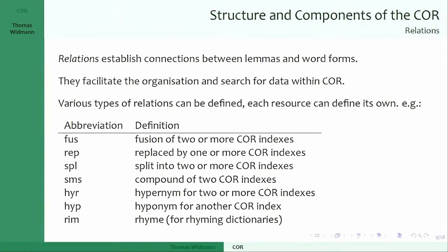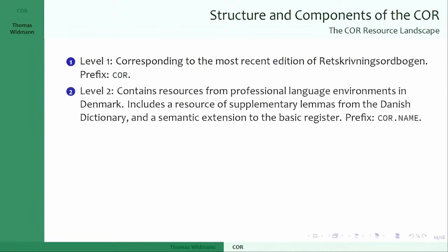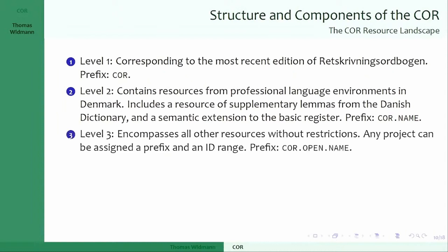The resource landscape has levels. Level 1 is what you've seen — the basic register. Level 2 is for resources published by professional language environments in Denmark, such as the Centre for Language Technology at the University of Copenhagen and the Society for Danish Language and Literature (DSL). They are working on a resource right now and will name it 'COR dot something'.